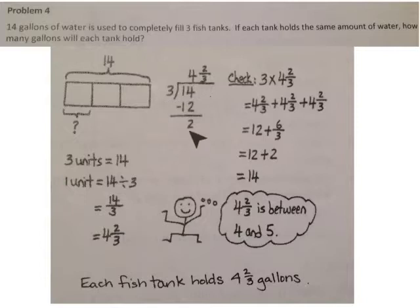Fourteen divided by three. Three times four is twelve. We have two remaining that still have to be divided by three. Fourteen divided by three is four and two-thirds. We check it with multiplication and repeated addition. Twelve plus six-thirds is the same as twelve plus two. Gives us fourteen, which is the number we started with, which was our dividend. Each fish tank holds four and two-thirds gallons. Four and two-thirds is between the whole numbers four and five.